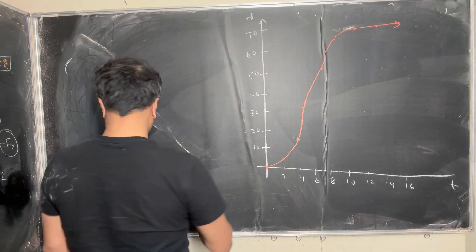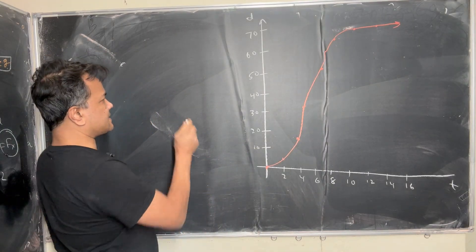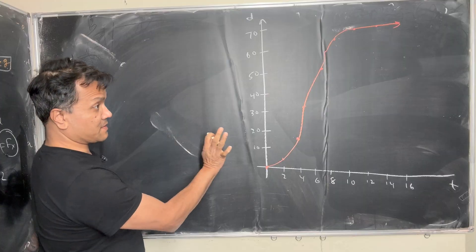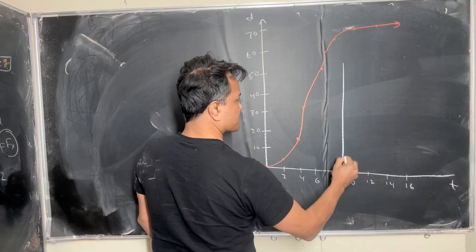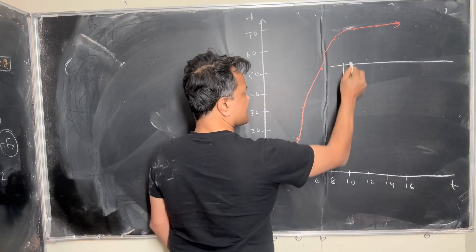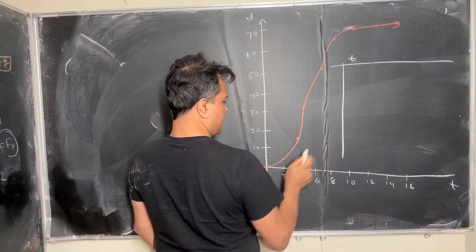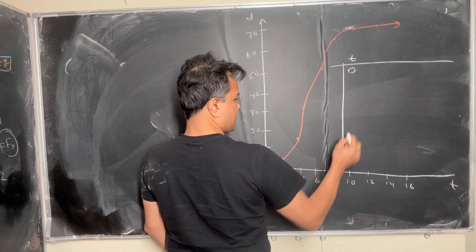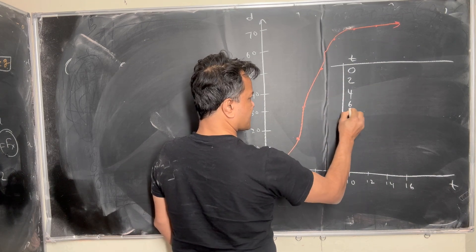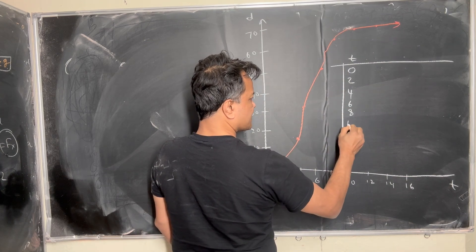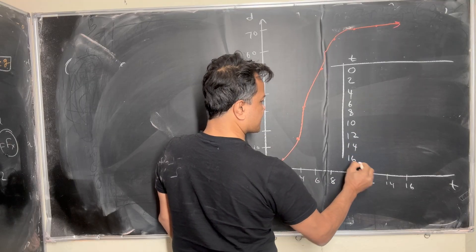So now what I'm going to do is create a table from this. The time values are going to be: zero, two, four, six, eight, ten, twelve, fourteen, and sixteen.